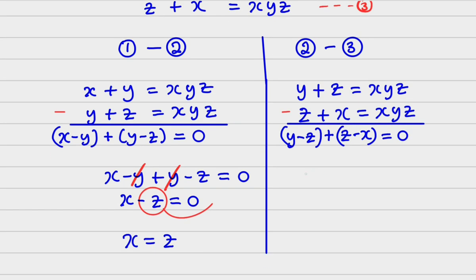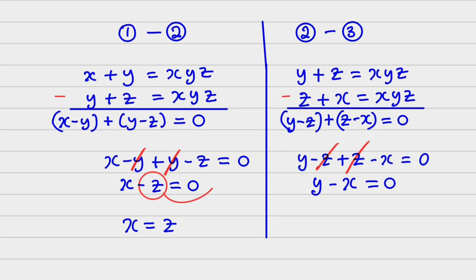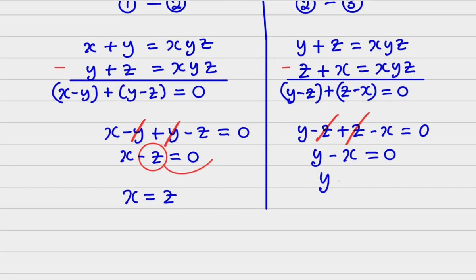Now, expanding the bracket, we have y minus z plus z minus x is equal to 0. You can see that the z terms cancel — plus z and minus z — so I have y minus x is equal to 0. Therefore, we can see that y is equal to x.